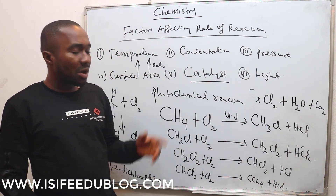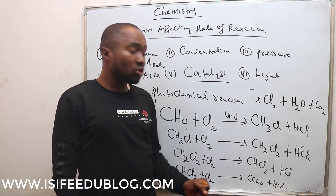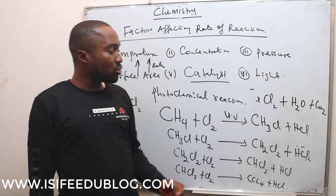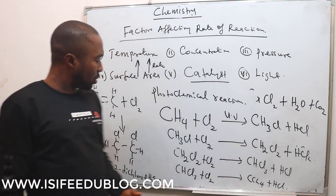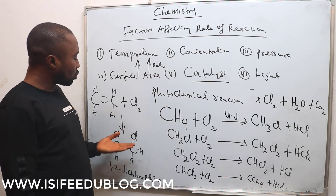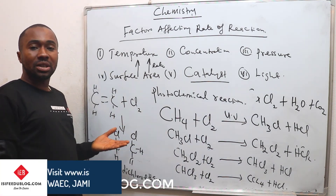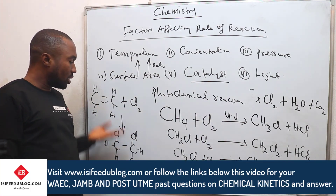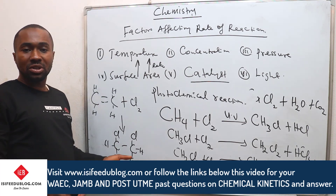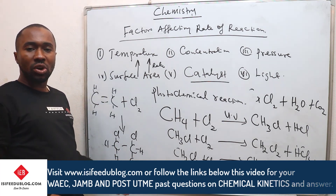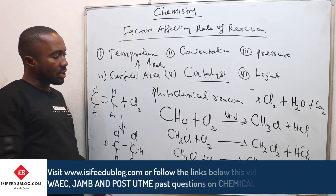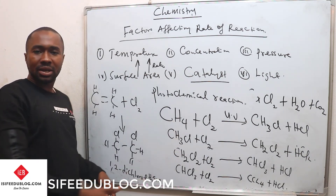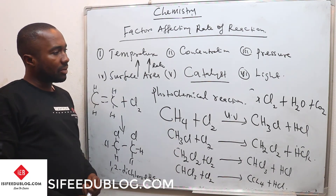This reaction can only occur in the presence of sunlight. When there is no sunlight, this reaction cannot happen. But alkenes and alkynes can easily react even in the absence of sunlight. That is one of the major differences between alkanes and alkenes.